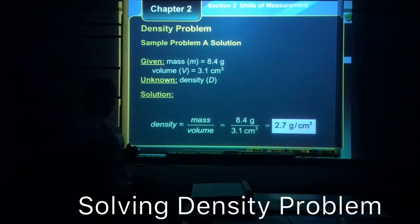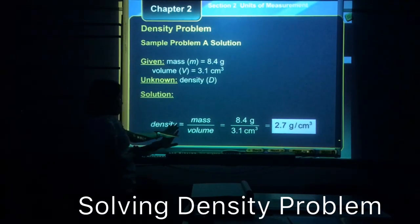So let's go back to the definition of density. Density is the ratio of mass and volume. So density is equal to mass over volume.